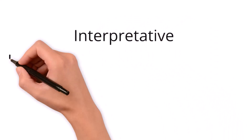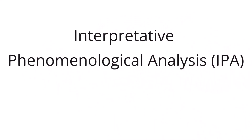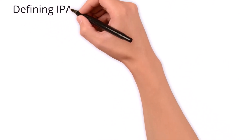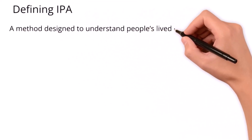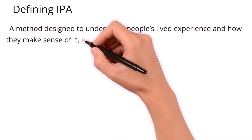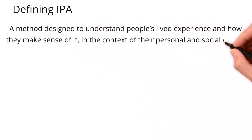In this video we're going to be looking at Interpretive Phenomenological Analysis, or IPA for short. IPA is an approach interested in understanding people's lived experience and how they make sense of it, and it involves in-depth qualitative data collection and analysis. Smith et al. define IPA as a method designed to understand people's lived experience and how they make sense of it in the context of their personal and social worlds.